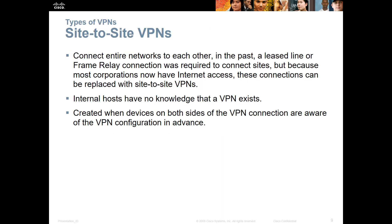You can connect entire networks to one another. In the past you used to have to use leased lines, but that is being replaced by site-to-site VPNs. There are other layer 2 technologies like MPLS and Metro Ethernet, but right now we're focusing on site-to-site VPNs — using the existing infrastructure of the internet to connect remote locations. Internal hosts have no knowledge that a VPN exists; traffic flows seamlessly between locations.